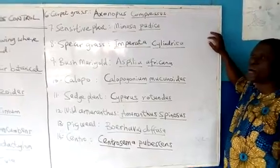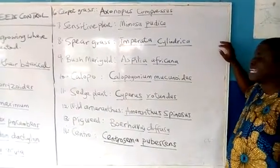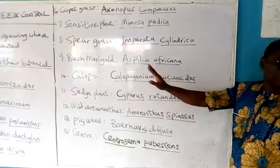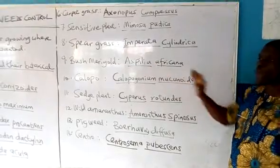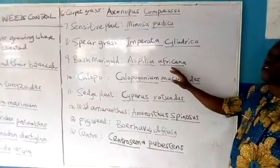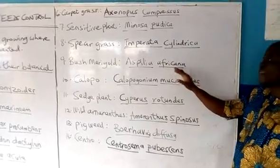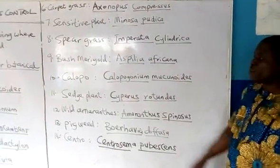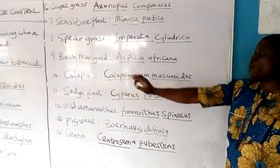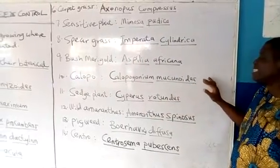They also have what we call Bush Marigold. Its botanical name is Aspilia africana. This one is very easy to take notice of because when you look at it, it has beautiful colored gold-yellow flowers.